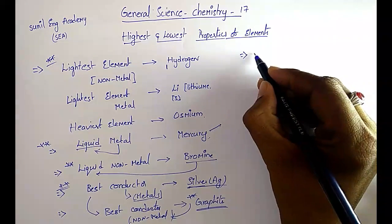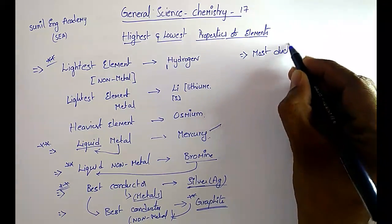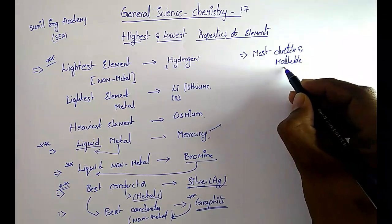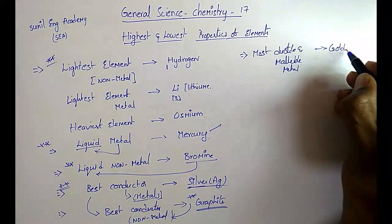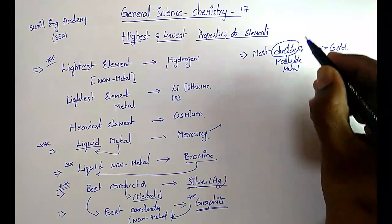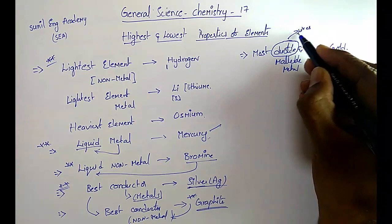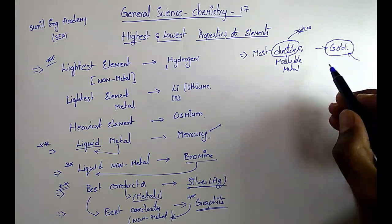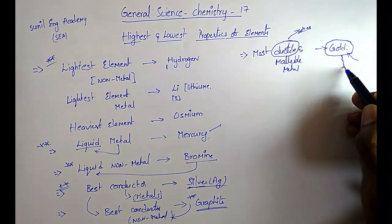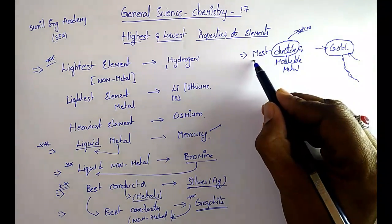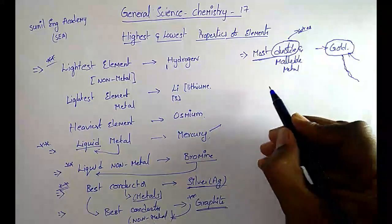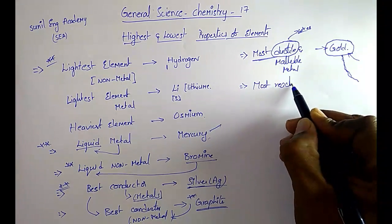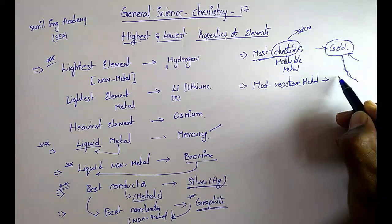The next important one: most ductile and malleable metal. That is gold. Ductile means we can make the metal into very small thin wires. We can convert gold into very small thin wires, so the most ductile metal is gold.